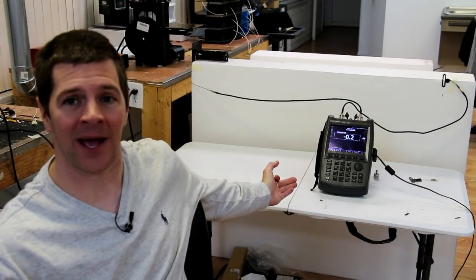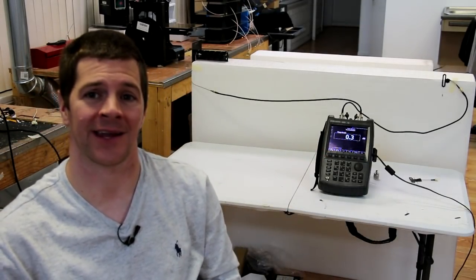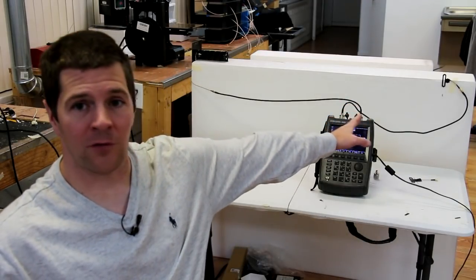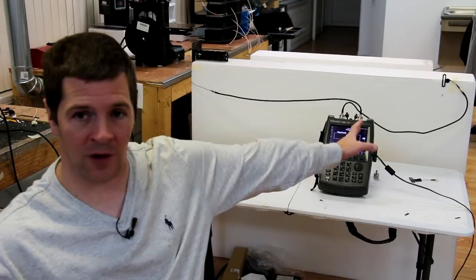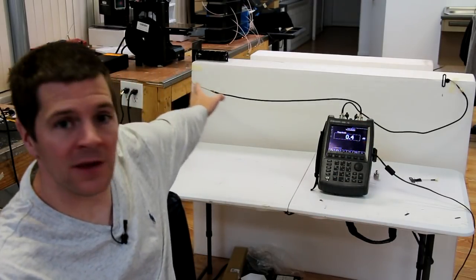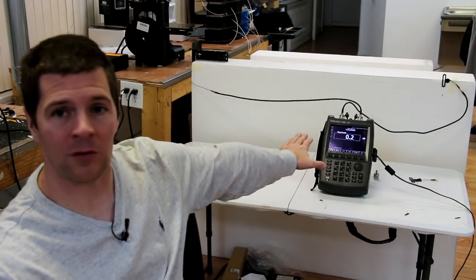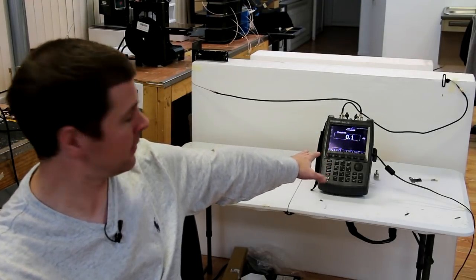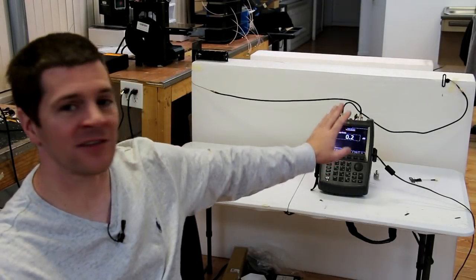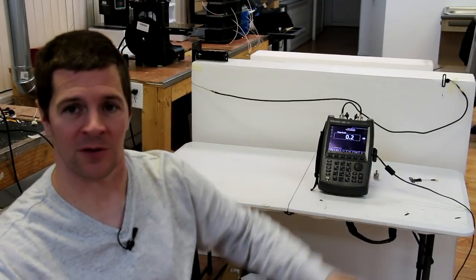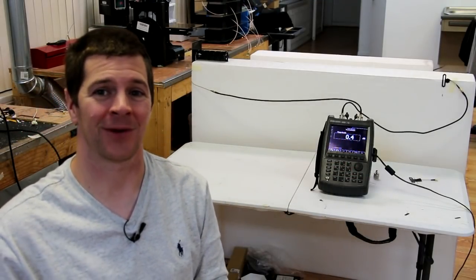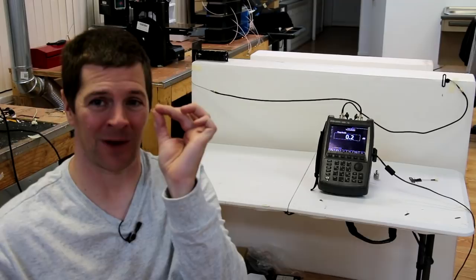Behind me I have my Agilent FieldFox Vector Network Analyzer set up in vector voltmeter mode. The 2.4 GHz diamond is in transmit configuration where the helical over here is receiving, and as you can see I've normalized my voltmeter so that it's approximately 0 dB between the two of them. But watch what happens when I connect a diamond with this wire attached.